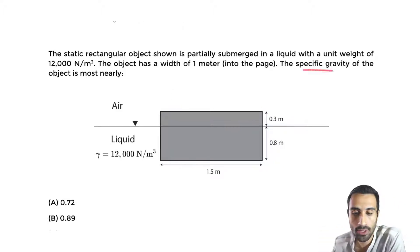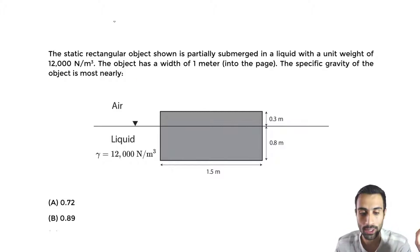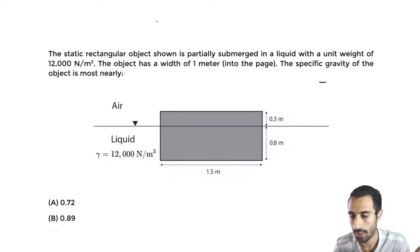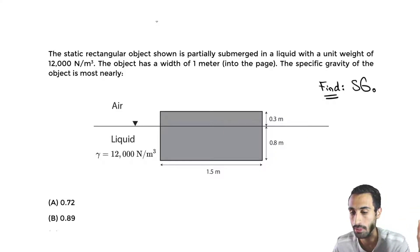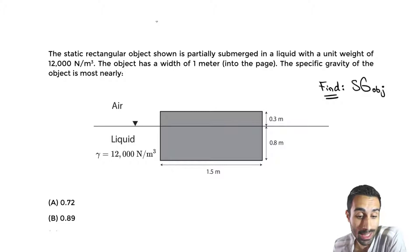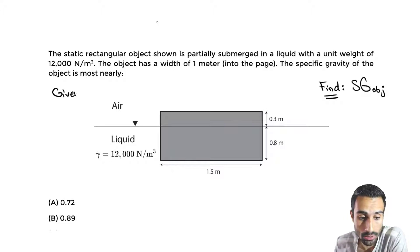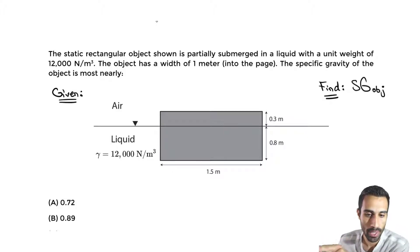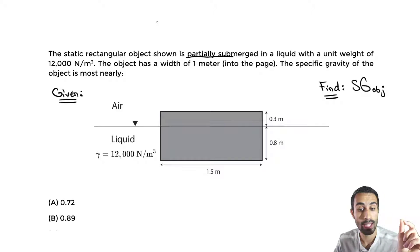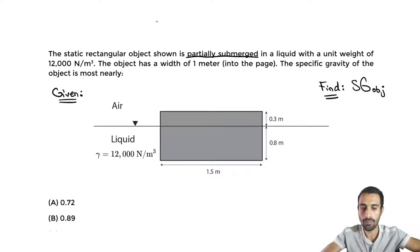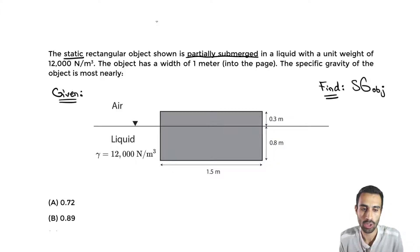We're told the specific gravity of the object is most nearly what, so we want to find the specific gravity of this rectangular object. The keyword 'partially submerged' tells us it's floating — it's not sinking or fully submerged. It's static, meaning it's in equilibrium: static equilibrium, partially submerged, hydrostatic conditions with a floating rectangular object.